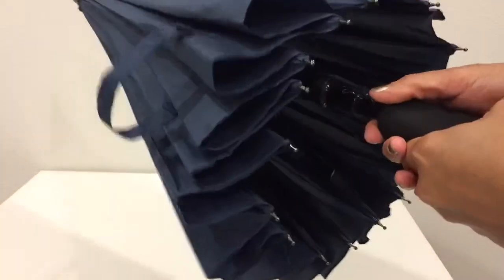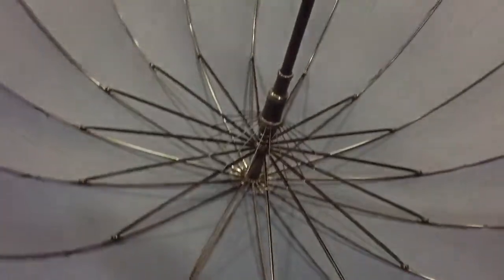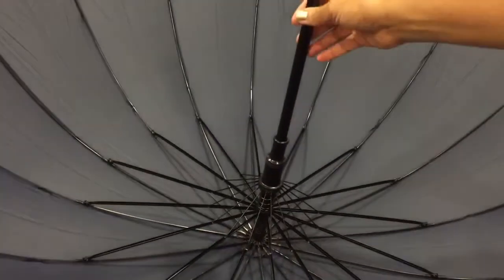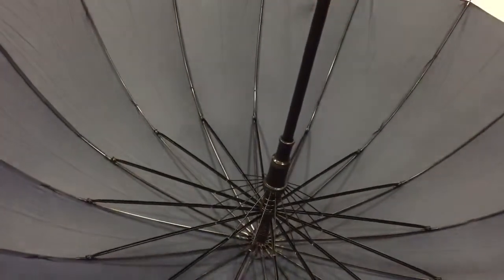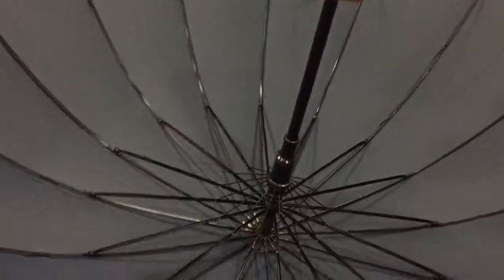So this is automatic, I will open it for you guys. As you can see, the pole here in the middle is thick and it's made of aluminum, and the ribs here, the supporting ribs are made of fiberglass.